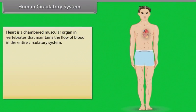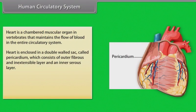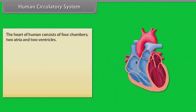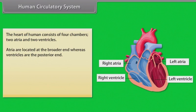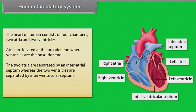Heart is a chambered muscular organ in vertebrates that maintains the flow of blood in the entire circulatory system. It is enclosed in a double-walled sac called pericardium, consisting of an outer fibrous inextensible layer and an inner serous layer. The pericardial fluid between these layers prevents friction between the walls of the heart and surrounding tissues. The human heart has four chambers: two atria located at the broader end and two ventricles at the posterior end, separated by interatrial and interventricular septa respectively.